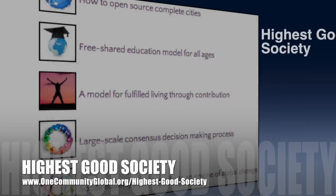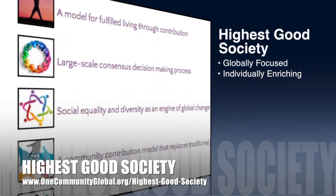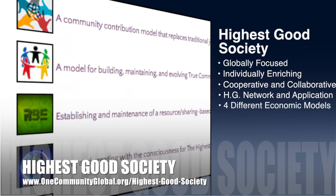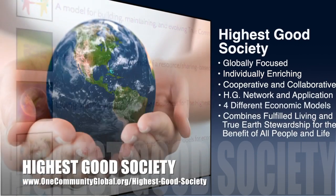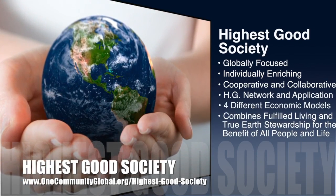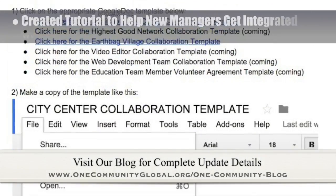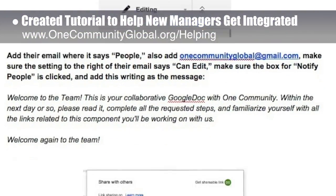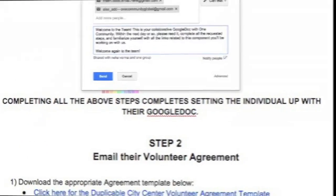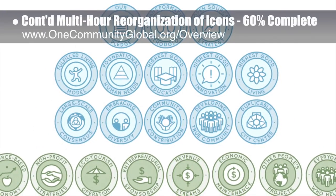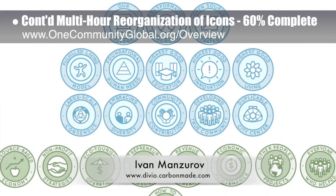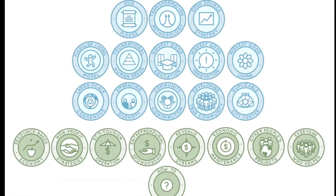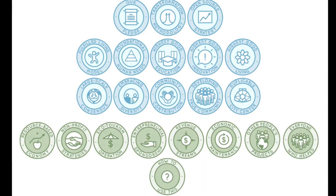The One Community approach to highest good society is globally focused, individually enriching, cooperative and collaborative, includes a highest good network and application, four different economic models, and combines fulfilled living and true earth stewardship for the benefit of all people and all life on this planet. This last week, the core team created a new onboarding tutorial to help new managers and teams integrate into our system easily. We also made final edits and continued the multi-hour reorganization of icons designed by graphic designer Ivan Manzarov — finishing the highest good society and highest good economics icons, now about 60% done with this graphics task.